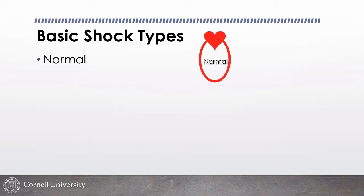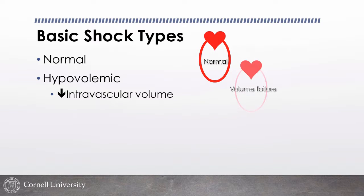We also think about four basic types of shock. When I think about shock I think about what's happening in the body: the cells are screaming for more oxygen delivery, which involves the heart as the pump, the vasculature as the circuit, and the volume within the circuit. In a normal patient the heart pumps well, the circuit constricts to direct blood to the right places, and there's adequate volume. In a hypovolemic patient, the heart and circuit are working but there's just not enough volume.